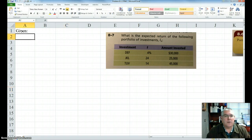This is actually a pretty easy problem once you know how to do it. So we have our investment, DEF, JKL, and TUV. Okay, and we have our expected return, R.